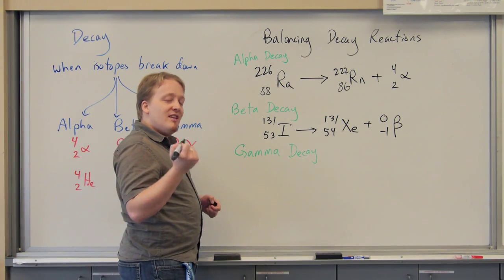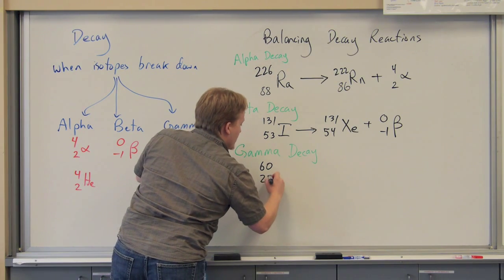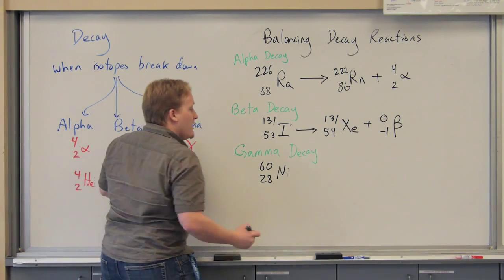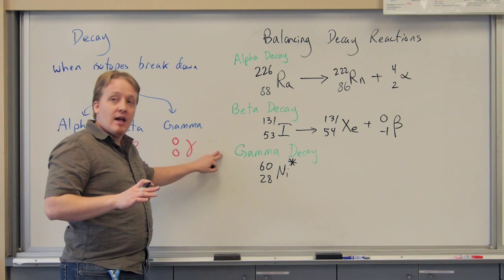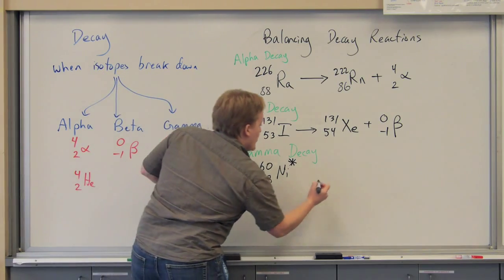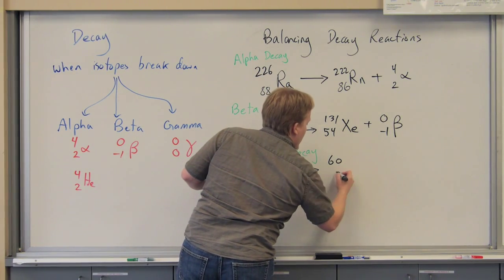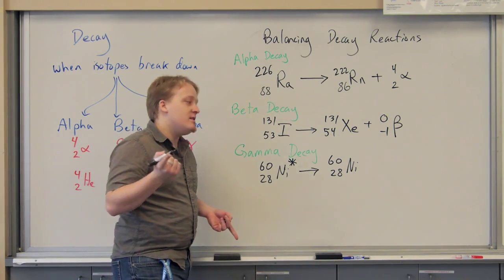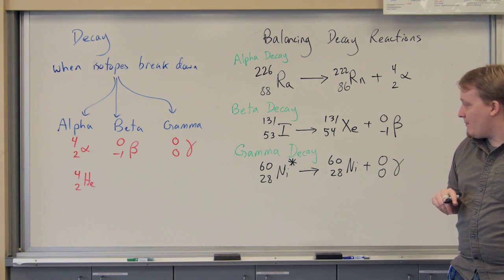So our last one is going to be an unstable nickel isotope. Mass of 60, atomic number of 28, the symbol Ni. Now, to show that this nickel can undergo gamma decay, we're going to put a star next to the symbol. And that's only going to be present when you're dealing with gamma decay. And the star delineates that this isotope will undergo this type of decay. So our product here, because there's no mass to a gamma ray, is still nickel. It's still a mass of 60, an atomic number of 28, and the symbol Ni. But the star is gone. And instead, what we add is that gamma ray symbol, zero, zero, gamma.